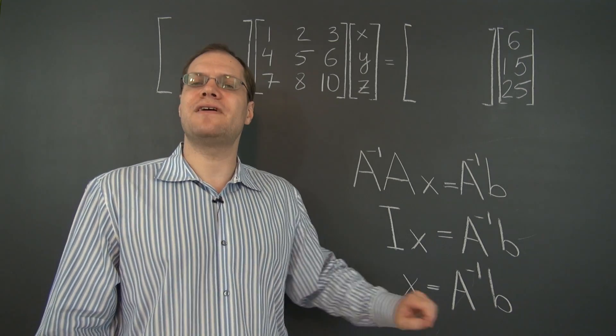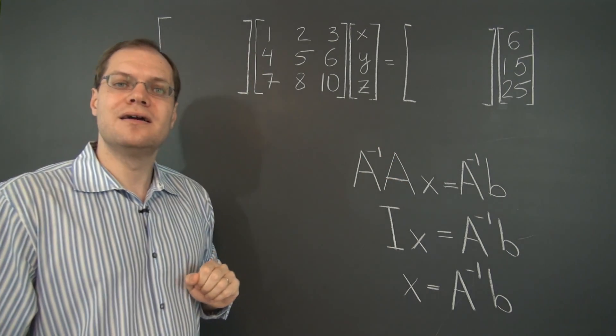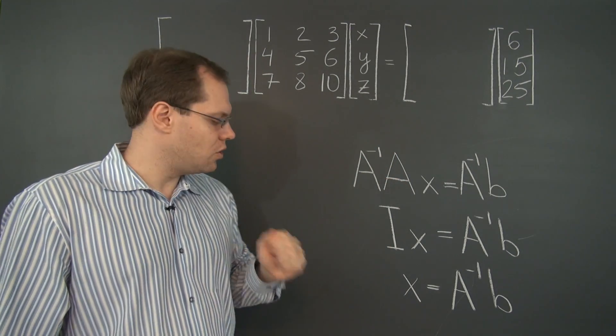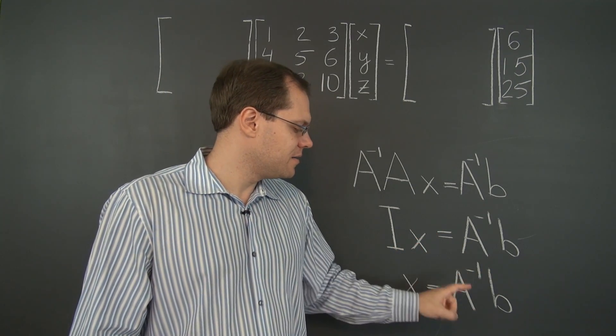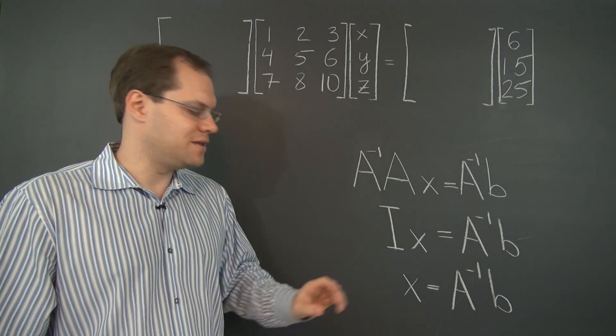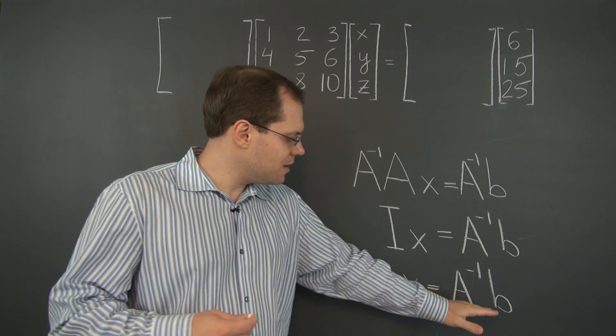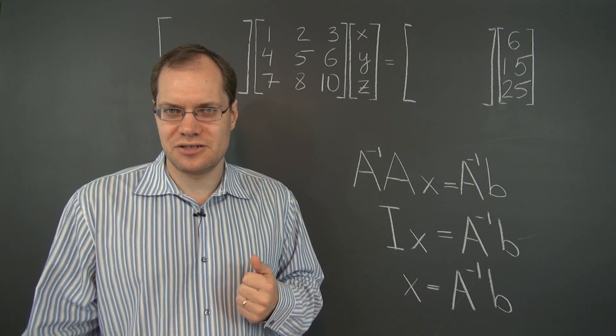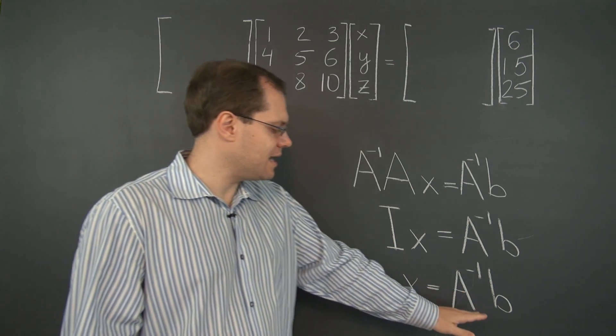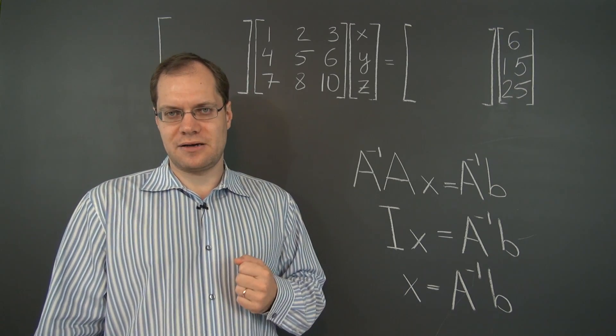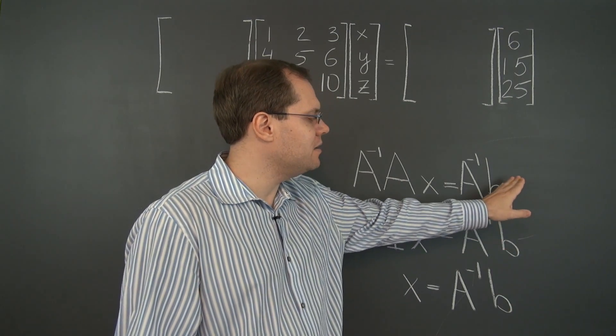So if we have A inverse, then any linear system, Ax equals any right hand side b, is pretty much solved. All we have to do to determine the matrix of the unknowns is to multiply the right hand side by A inverse. So the answer is A inverse b. We've seen it before, but before we came up with this expression simply by analogy with the ordinary equations such as 5x equals 4. Well, now we have the full framework mapped out.